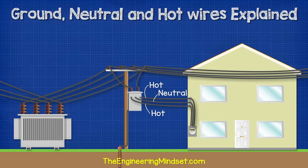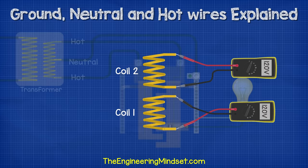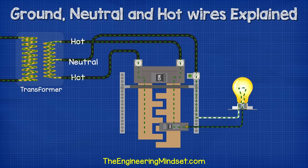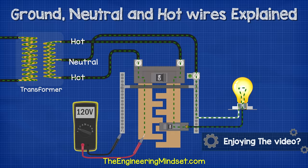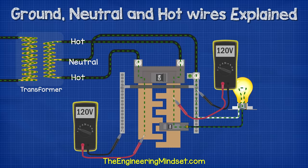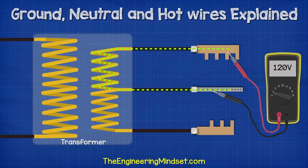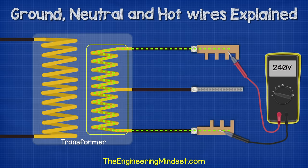In North America we have a split-phase supply to most residential properties, so we have two hot wires and one neutral wire. We simply have two 120-volt coils which are connected together in the transformer. The neutral is then connected to the center between the two coils. When we connect our multimeter between a hot and the neutral we get a reading of around 120 volts, and we get the same reading for the other one — because we're only using half of the coil. But when we connect between the two hots we get 240 volts because we're using the full length of the transformer coil.